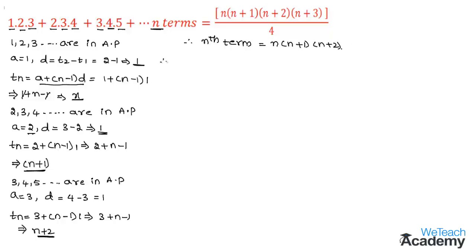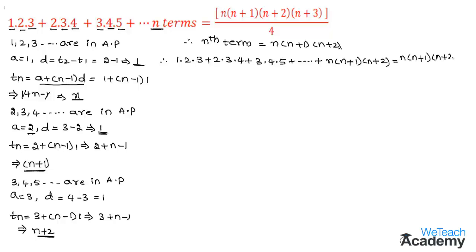So the series is 1×2×3 + 2×3×4 + 3×4×5 + ... + n(n+1)(n+2) = n(n+1)(n+2)(n+3) / 4. Let us consider this series as P(n). Here begins the principle of mathematical induction.